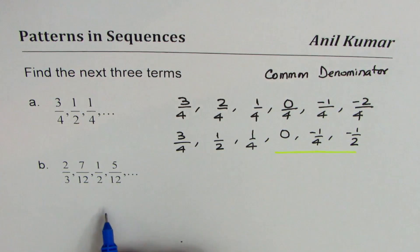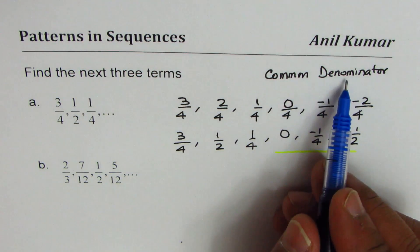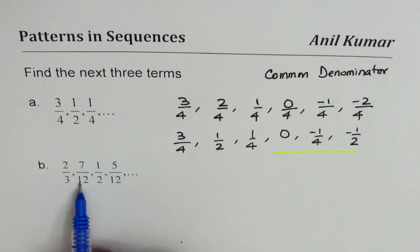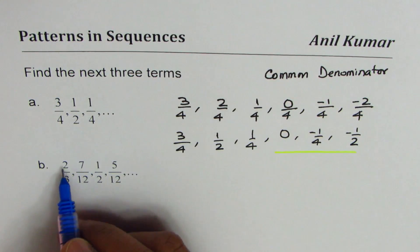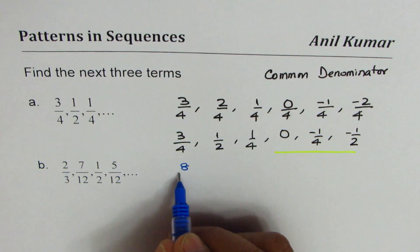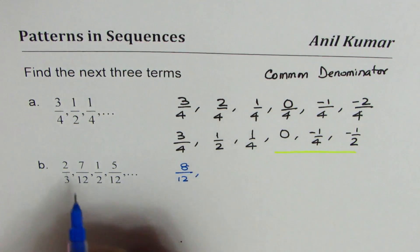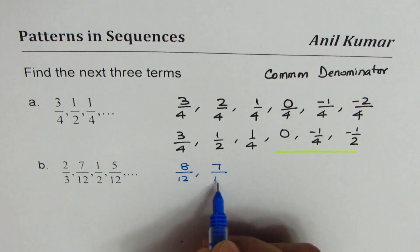The first strategy is common denominator. We could have a denominator of 12. So I will write 2/3—how do I get 12? 3 times 4 is 12. So 2/3 is the same as 8/12 when we multiply both by 4. We have 7/12.